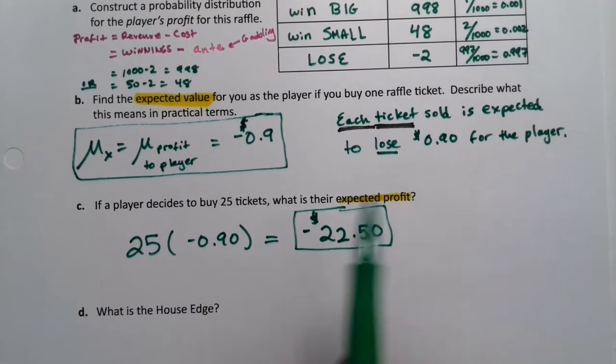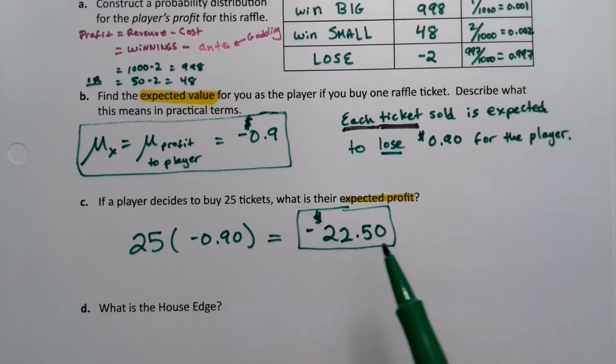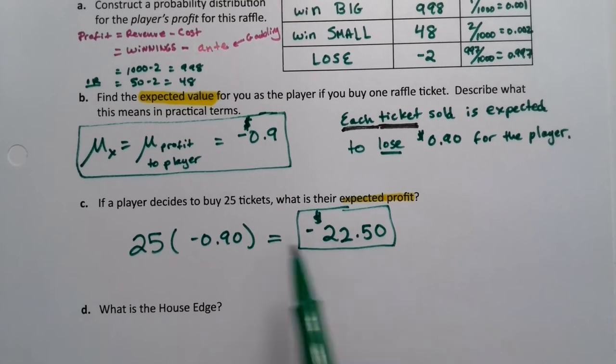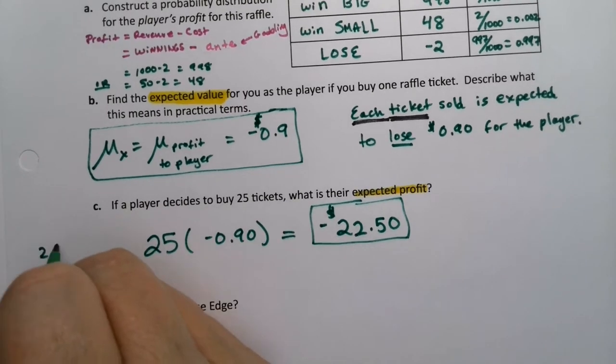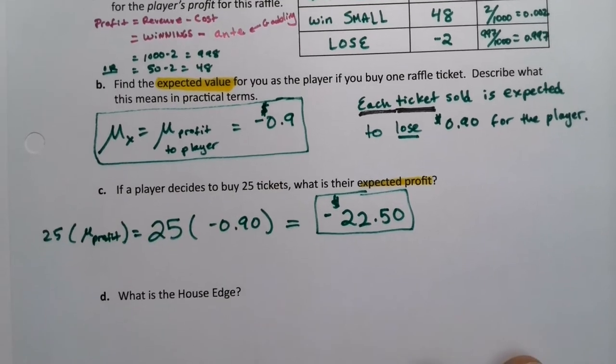Put a dollar sign next to it. And there you have it. That's all. Because when you figure out the profit for one ticket, you're kind of figuring out the profit for as many times as you want to play. So what you're doing is 25 times your expected value of profit. Simple as that.